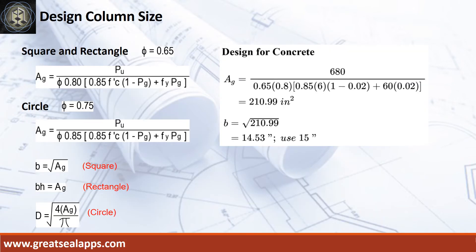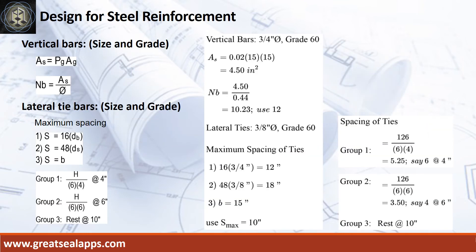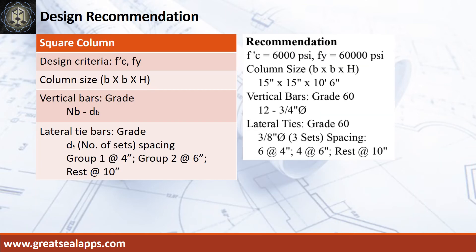Given factored load equals 680 kips, the gross area of section is 210.99 square inches, for a column side of 15 inches. Given steel ratio of 2% and column side equals 15 inches, the area of steel for vertical bars is 4.5 square inches. The number of bars for 3/4 inch diameter is 12. Follow the given computations for lateral ties. Design recommendation as follows.